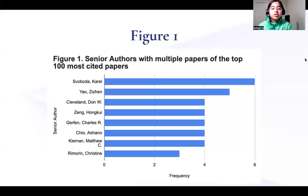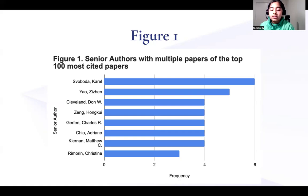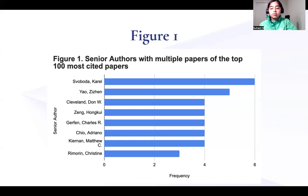This is our first figure, which is about the senior authors with multiple papers of the top 100 most cited papers. Here on the x-axis we have the frequency, and the y-axis has the senior authors. This figure was created in Google Sheets, but our data was obtained from the 100 most cited papers, and the highest number of entries of a single publisher, as you can see at the top, was six.